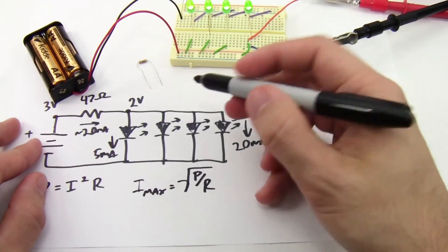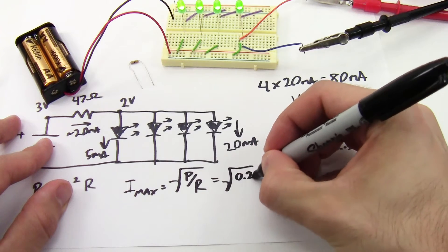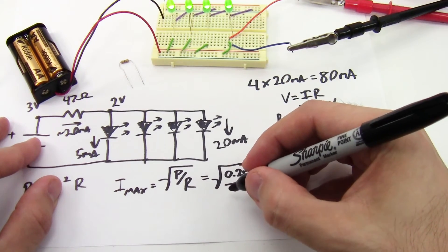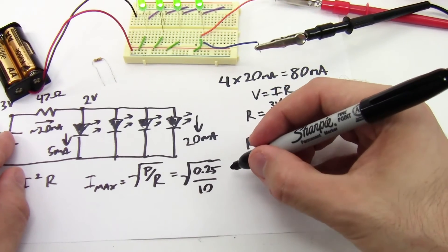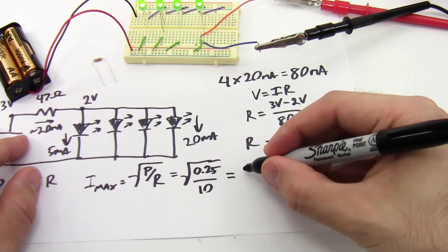In this case, I know that the power rating of this resistor is a quarter watt, or 0.25 watts, and the resistance is 10 ohms, not 12.5 because I didn't have a 12.5 ohm resistor. So if I calculate that, it gives me a maximum current of about 150 milliamps.